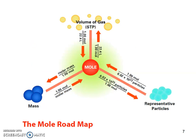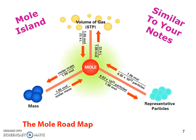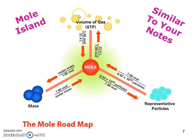In the textbook, this is called the mole road map. In your notes, it's very similar, but I like to call it mole island — just a little more fun. When we go from mass island to mole island, we can do that because there's a bridge. But if we wanted to go from mass island to volume island, we can't do that directly — we have to go from mass island to mole island to volume island. Mass is really grams, volume is really liters, and those particles are the four things we talked about.